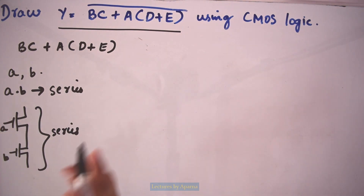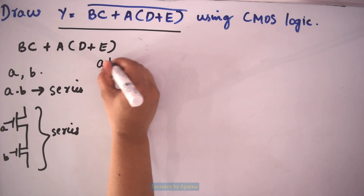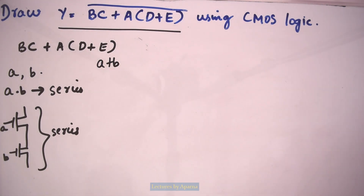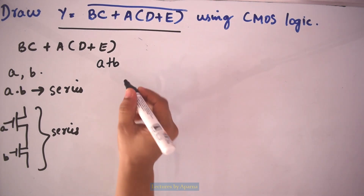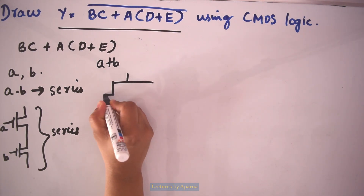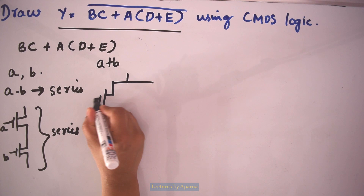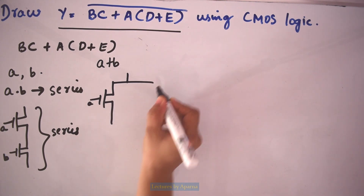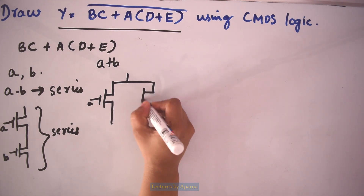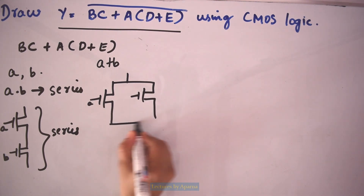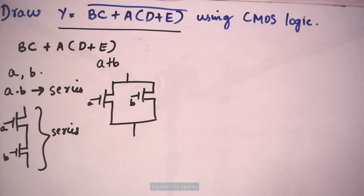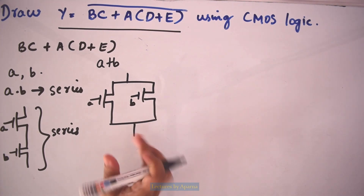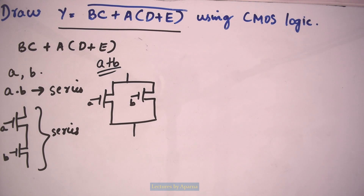Now if you want to implement A plus B, then the transistors should be connected in parallel. So when they are in parallel they will implement the OR operation.